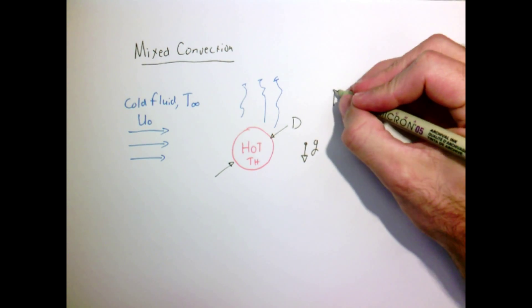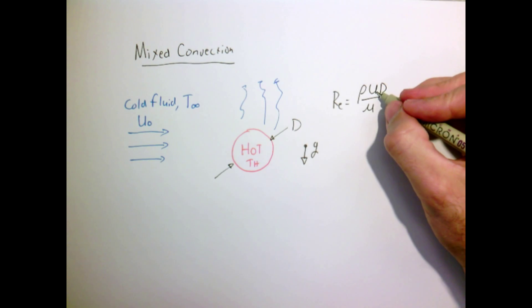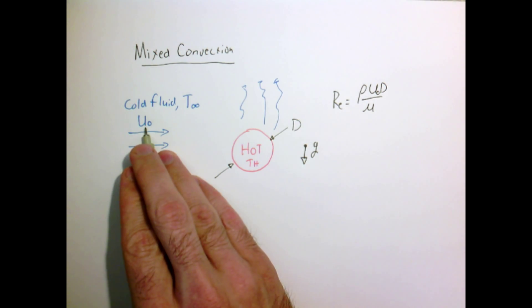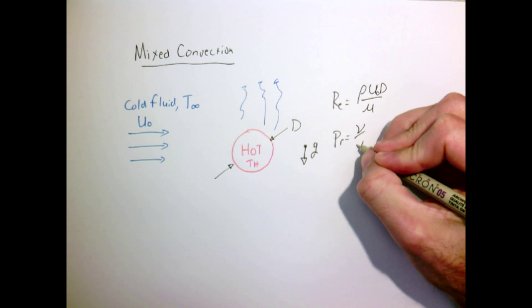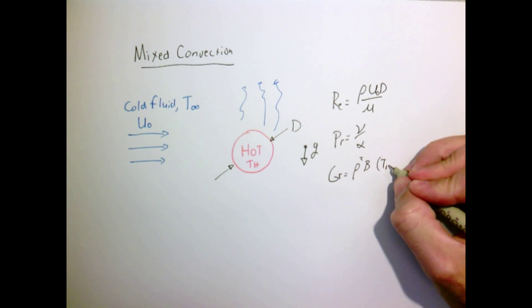If we simply follow the kind of analysis that we've done before of dimensions, we'd find out that we have three parameters: the Reynolds number, which is connected with the velocity that we know that we're forcing across the object; the Prandtl number, which is just a property of the fluid; and our new parameter, the Grashof number.